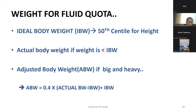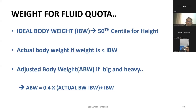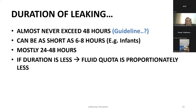The fluid quota concept has been introduced, along with weight-based calculation for obese children. When actual body weight is less than ideal body weight, use actual body weight. When slightly higher, use ideal body weight (50th centile). When markedly higher, use adjusted body weight, which is: 0.4 × (actual − ideal) + ideal. Since leaking almost never exceeds 48 hours, you may not need the full fluid quota — give proportionately less if leaking is shorter.